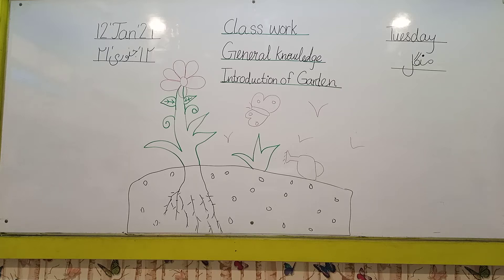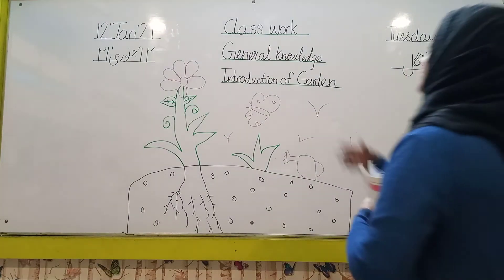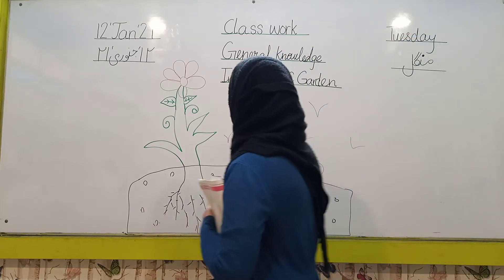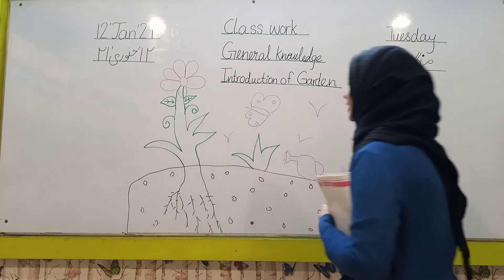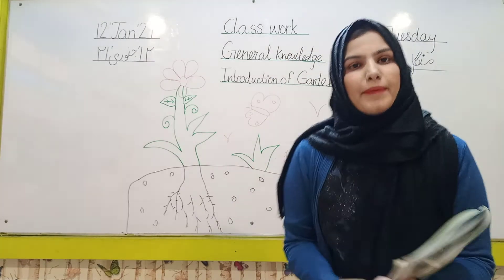I will tell you about what is a garden, what is the meaning of garden, and what is the color of the garden. Everyone open unit number three — Garden. Look at the picture of the garden.